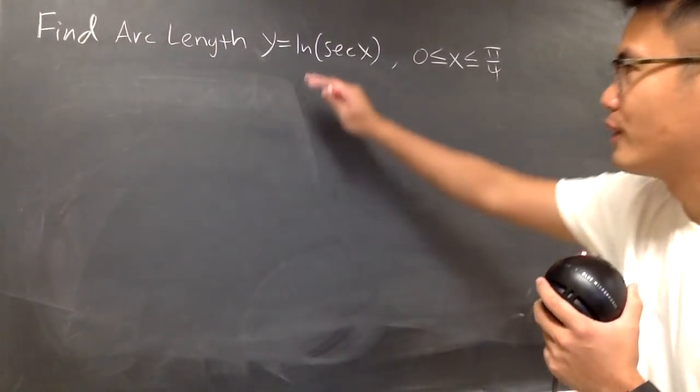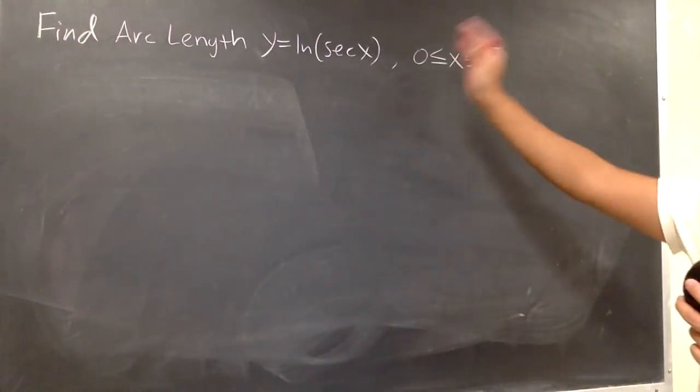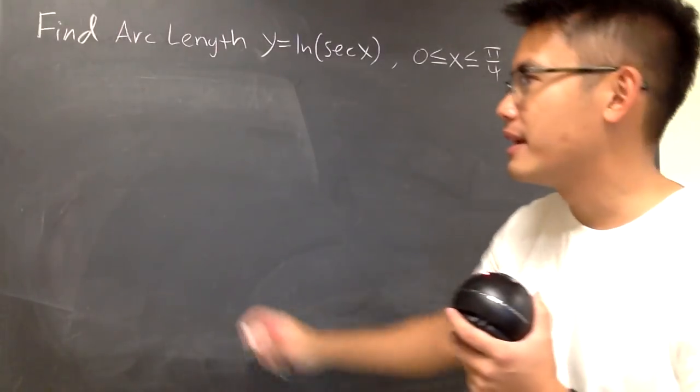Okay, we are going to find the arc length of this curve from x value 0 to π/4. So let's go ahead and get started.